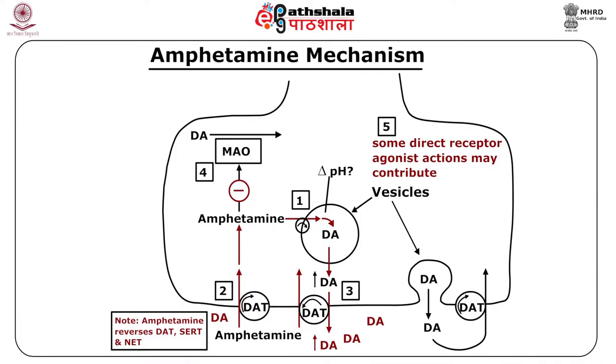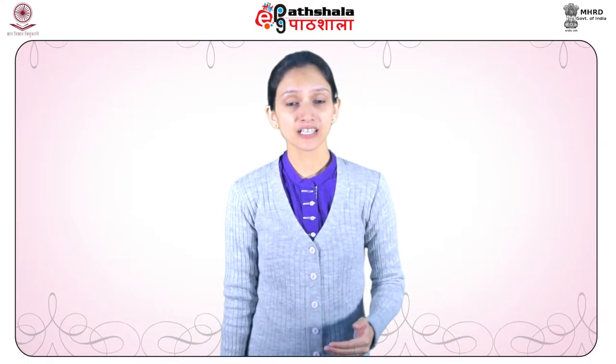The major mechanism of action of amphetamines involves the release of monoamines from storage sites in axon terminals, which leads to increased monoamine concentration in the synaptic cleft. The release of dopamine in the nucleus accumbens and related structures is responsible for the reinforcing and mood elevating effects. Cardiovascular effects result from the stimulation of release of noradrenaline. The dopamine released into the cytoplasm of neurons undergoes oxidation, resulting in the production of several toxic chemicals including oxygen radicals, peroxide, and hydroxyquinones.